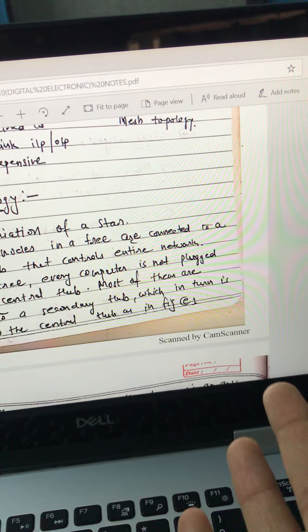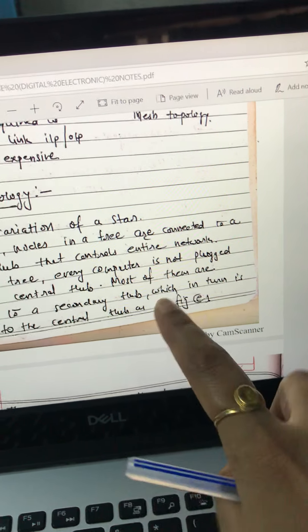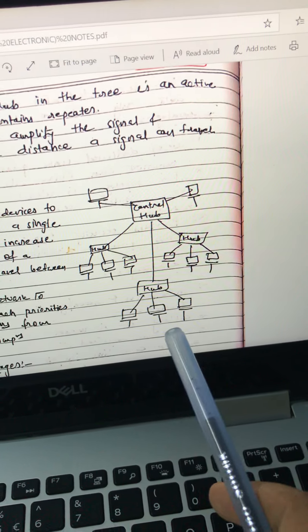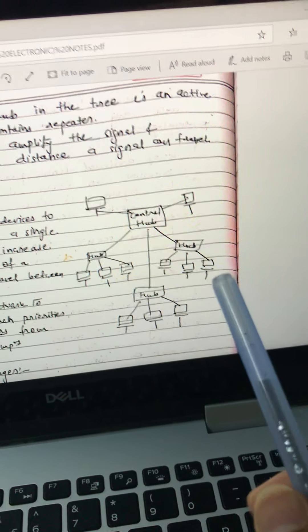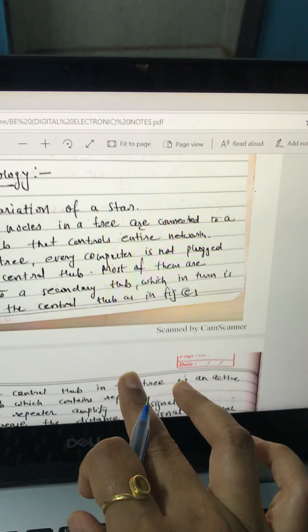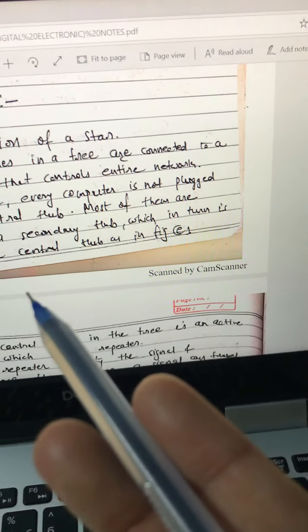Then it came to tree topology. In a market, this one is tree. So it is nothing but the advanced version of mesh topology. So it is the variation of star. In a star, nodes in a tree are connected to central hub that controls the entire network.